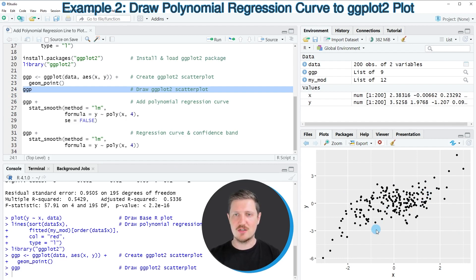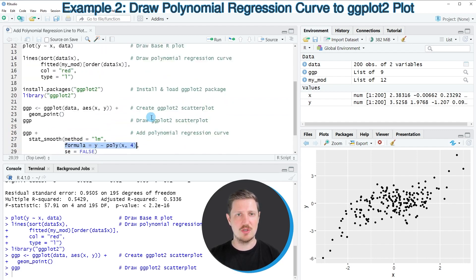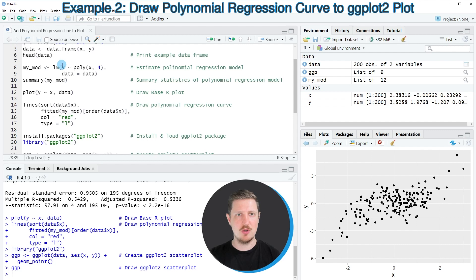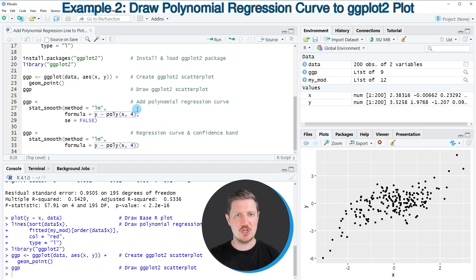Now if we want to add a polynomial regression line to this plot, we can use our plot object ggpl that we have created before and then we can add to this the stat_smooth function. And within this function we need to specify the method to be equal to lm and the formula to be equal to our formula that we have used before when we have estimated our polynomial regression model.